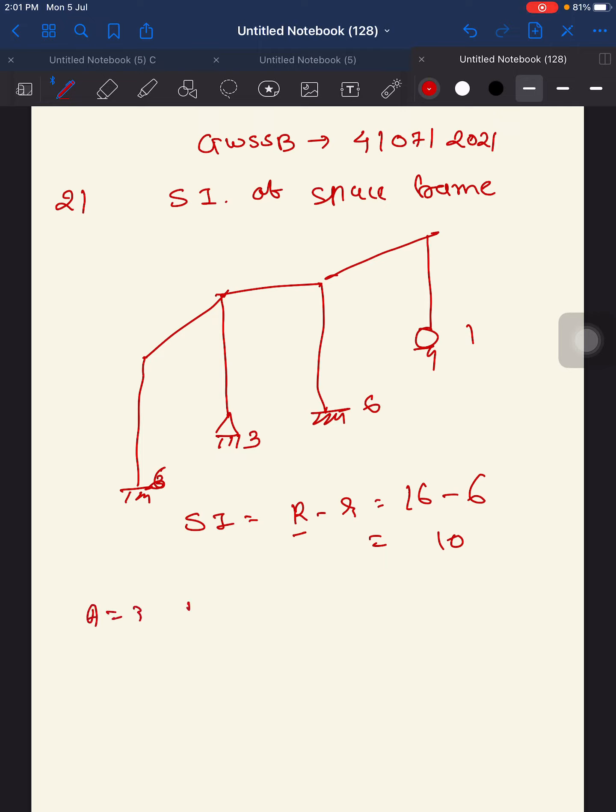So your answer is C = 10. The options are A = 3, D = 6, C = 10, and D = 13. So your answer is C = 10. Another way to calculate SI is 6M + R - 6J.